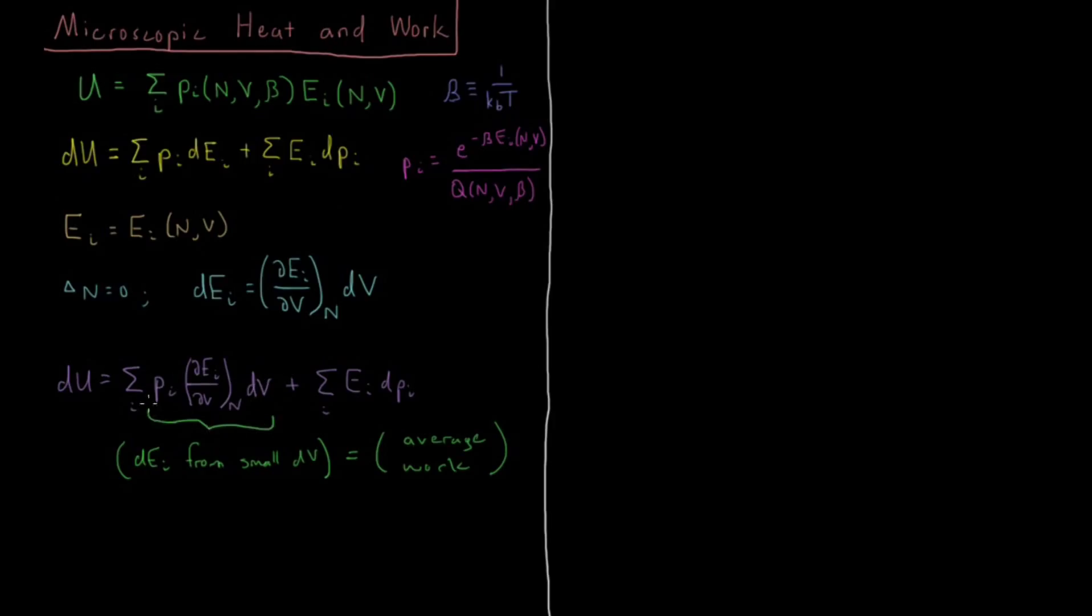So we have these small changes in the energy levels due to this mechanical disturbance. This can be interpreted as work on the molecular level. It's making a minor perturbation in the energy levels while leaving the probabilities conserved.